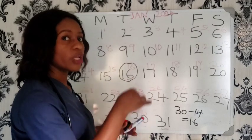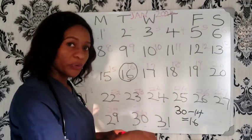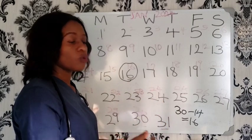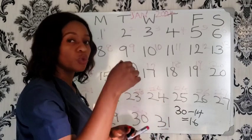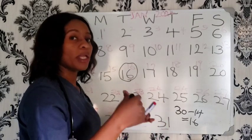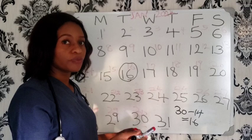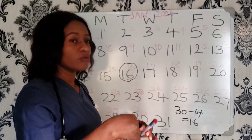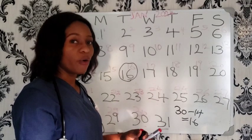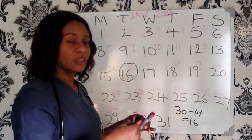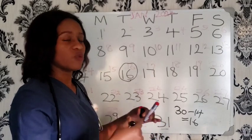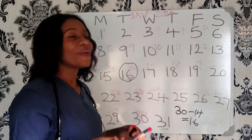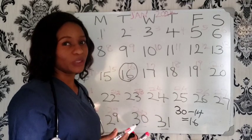I'm using this example to show you how you can calculate your safe days. With this example, you'll be able to do it regardless of your own menstrual cycle — whether it's 28 days, 34 days, 24 days, 25 days, 23 days, or any other length. It's the same method.